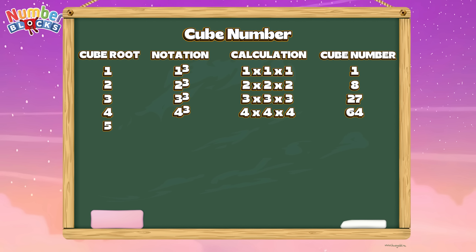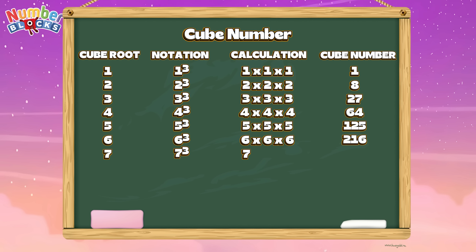5 cube, or 5 times 5 times 5, equals 125. Next is 6: 6 cube, or 6 times 6 times 6, equals 216. 7 cube, or 7 times 7 times 7, equals 343. 8 cube, or 8 times 8 times 8, equals 512.